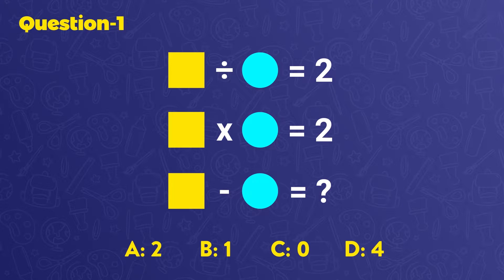Okay, first of all, let's study it. Look at the numerical values of the square and the circle. When we divide the square into the circle, we should obtain 2. Also, when we multiply the square by the circle, we should obtain 2. So, the square is 2 and the circle is 1.